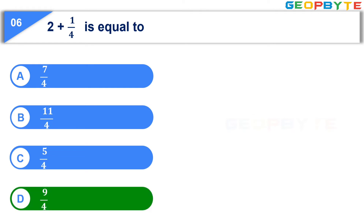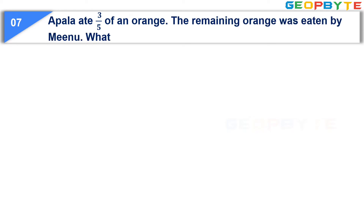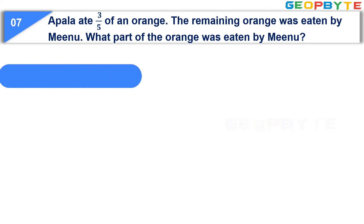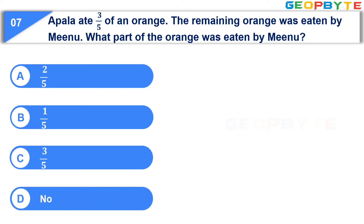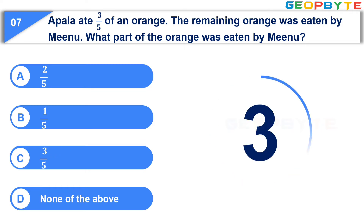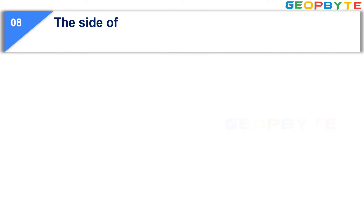The next question is, Apollo ate 3 by 5 of an orange. The remaining orange was eaten by Minu. What part of the orange was eaten by Minu? Option A, 2 by 5; option B, 1 by 5; option C, 3 by 5; option D, none of the above. Your time starts now. Your time is up and the correct answer is option A, 2 by 5.